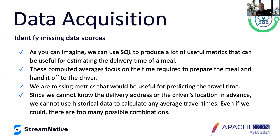What data sets are we missing? As we mentioned, there are three parts: meal preparation time, pickup time, and the biggest missing part is the driver delivery time. Even though we use SQL to produce many of these metrics, the real missing part is the driver delivery time. Since we can't know the delivery address or the driver's location in advance, we can't use historical data to calculate average travel times. There'd be too many possible combinations or not enough data — if a customer placed one order and it took 30 minutes, that would skew results. We really can't use existing data sets to make an accurate prediction on travel time.